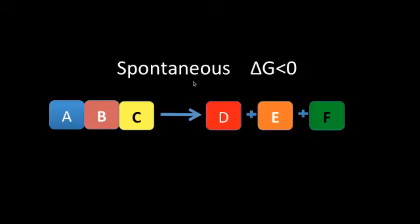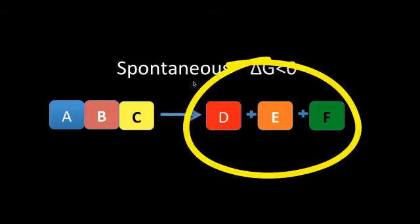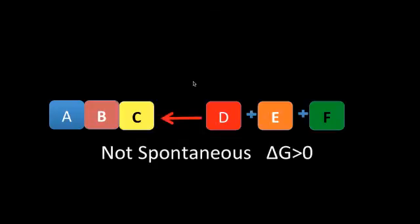Here it is again. Spontaneous reactions release their free energy and so the change in free energy is negative. Notice that the products are less ordered than the reactants. The reverse of this reaction is therefore not spontaneous. The change in free energy is positive. In fact, these reactions get their energy from the energy released by exergonic reactions that occur in the cell.